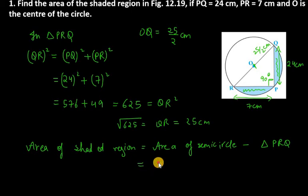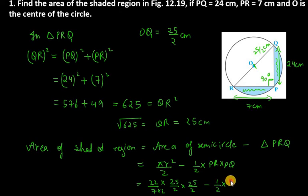Let's substitute all the values. Using π = 22/7, radius = 25/2, we get (22/7) × (25/2)² / 2 minus 1/2 × 7 × 24. After canceling, this becomes (11 × 25 × 25) / 28 minus 12 × 7.